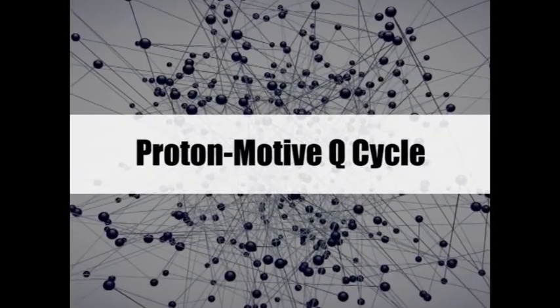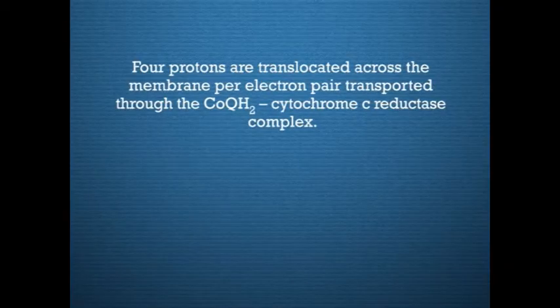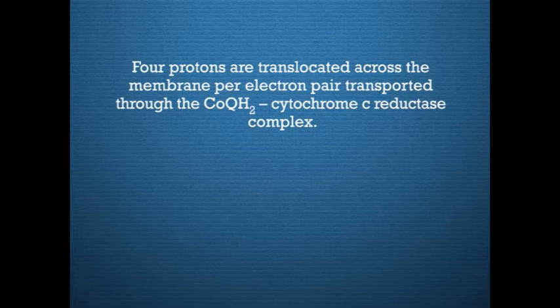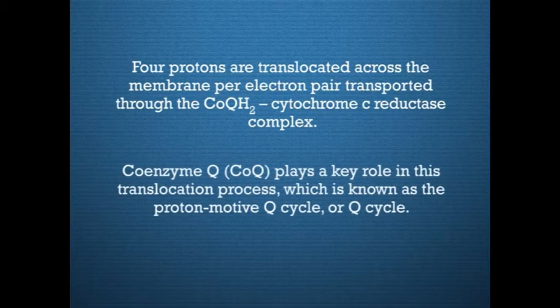The proton motive Q cycle: four protons are translocated across the membrane per electron pair transported through the dihydroubiquinone cytochrome C reductase complex. Coenzyme Q plays a key role in the translocation process, known as the proton motive Q cycle, or simply the Q cycle. During this process, coenzyme Q cycles between its reduced and oxidised states by accepting and releasing two protons and two electrons together.